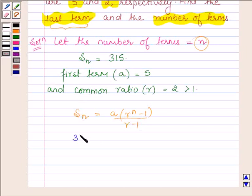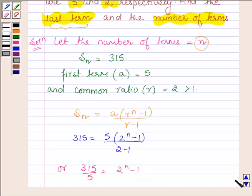315 = 5(2^n - 1)/(2 - 1), or 315/5 = 2^n - 1.